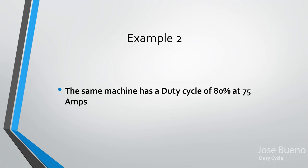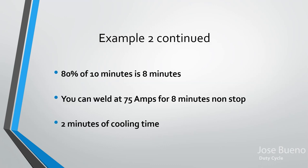Let's look at another example with the same machine. It shows another duty cycle: 80 percent at 75 amps. Thinking back — duty cycle is a 10-minute window. So at 75 amps with 80 percent duty cycle, you can weld non-stop for eight minutes. Once you hit eight minutes, you give the machine two minutes to cool off before welding again. You should start noticing a pattern.